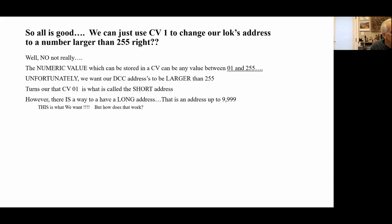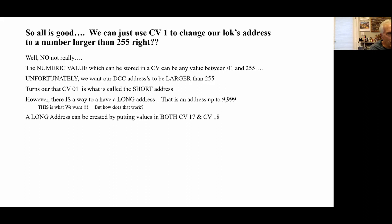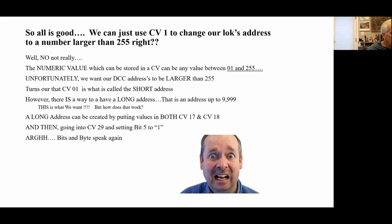However, good news — there is a way to have a long address, and that address can be a number from 1 to 9,999. A long address can be created by putting values in both CV17 and CV18. How do you put one number in two addresses? That's a bit tricky. And then we've got to go into CV29 and set bit five to a one. Here we go again with bits and bytes — but don't worry, the IntelliBox makes this easy to do.